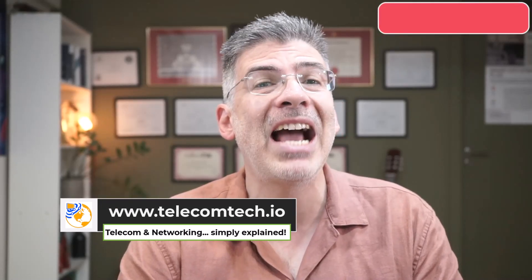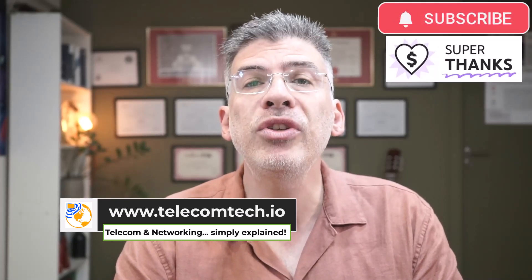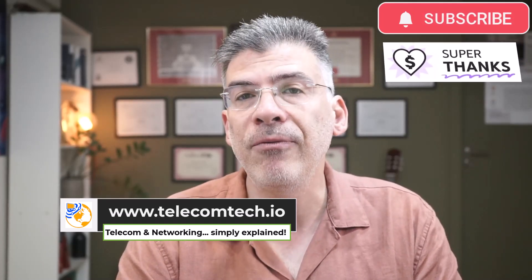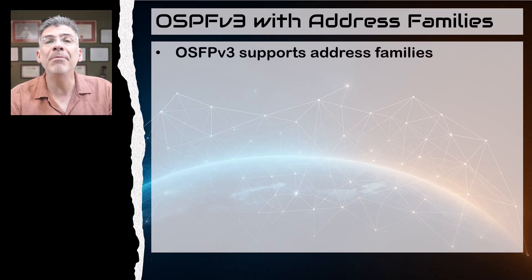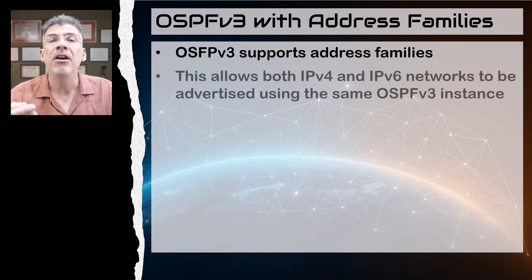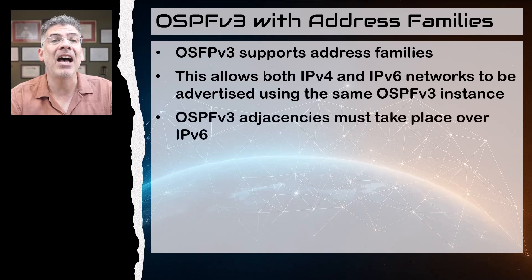If you want to configure an OSPF topology that has both IPv4 and IPv6 addresses, one option is to run two separate instances of OSPF — one using OSPF version 2 for IPv4 and one using OSPF version 3 for IPv6. However, OSPF version 3 has the capability of implementing address families, which allows you to share both IPv4 and IPv6 networks using the same OSPF version 3 instance. There's just one catch: OSPF version 3 supports only IPv6 OSPF adjacencies.